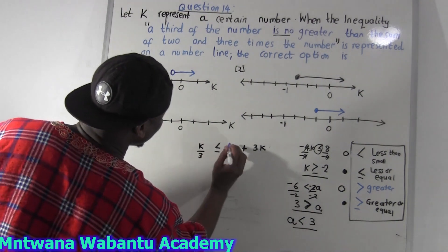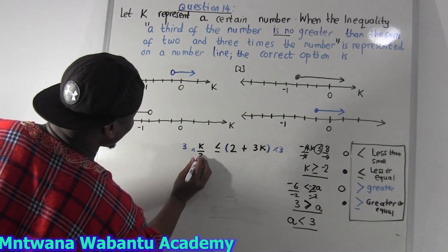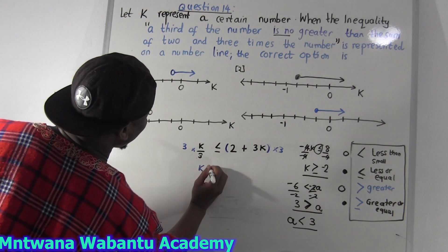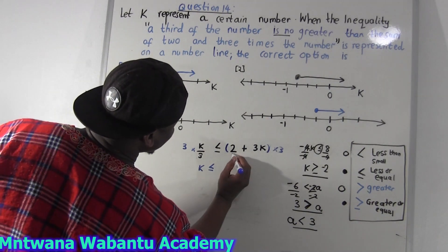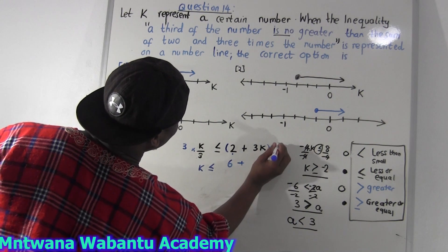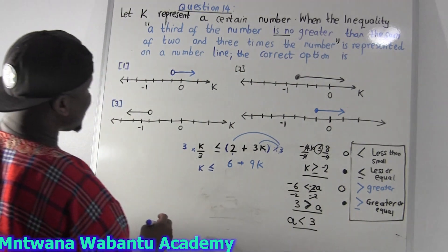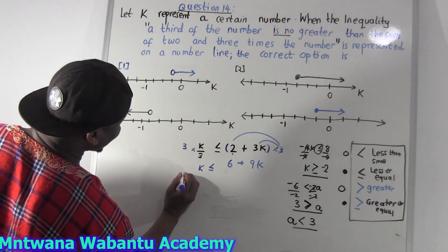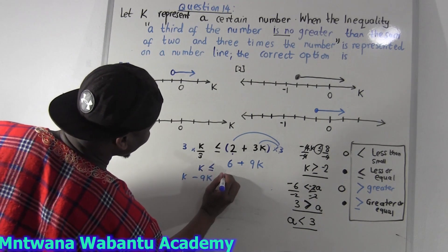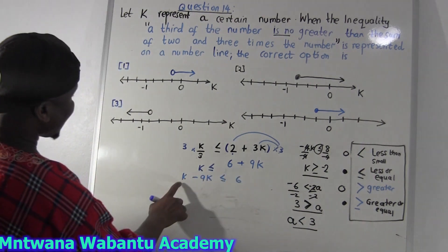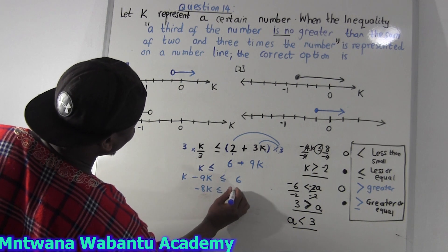Now let's solve this. We're going to do cross multiplication — multiply both sides by 3. The 3 on the left cancels with the denominator, leaving just K. On the right: 2 times 3 equals 6, and 3 times 3K equals 9K. So we have: K ≤ 6 + 9K. Now take 9K to the left: K minus 9K gives us negative 8K, less than or equal to 6.